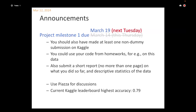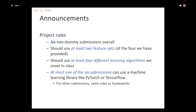By the end of the semester, you're supposed to submit the code of six different models. You should have six different non-dummy submissions. By non-dummy, I mean the dummy submission was the one at the beginning where you predicted all positive or all negative. Non-dummy is the output of some actual learning algorithm.